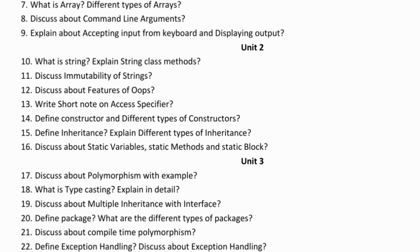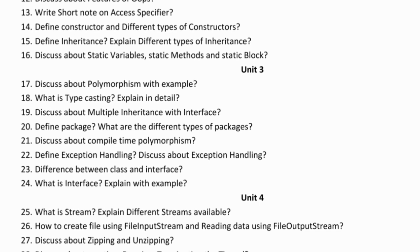In the third unit, the important questions are: discuss about polymorphism with example — you need to write an example program. Next, what is typecasting — explain in detail. You need to write the types of typecasting: narrowing typecasting and widening typecasting.